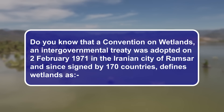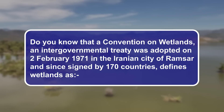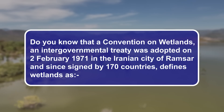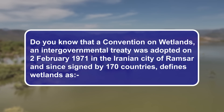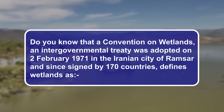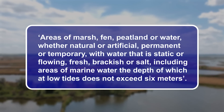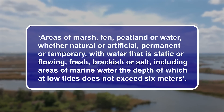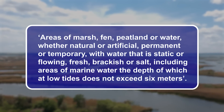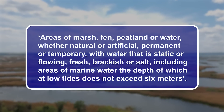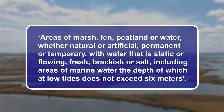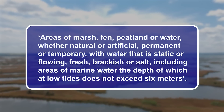A Convention on Wetlands, an intergovernmental treaty, was adopted on 2nd February 1971 in the Iranian city of Ramsar and has since been signed by 170 countries. It defines wetlands as areas of marsh, fen, peatland or water, whether natural or artificial, permanent or temporary, with water that is static or flowing, fresh, brackish or salt, including areas of marine water the depth of which at low tide does not exceed 6 metres.